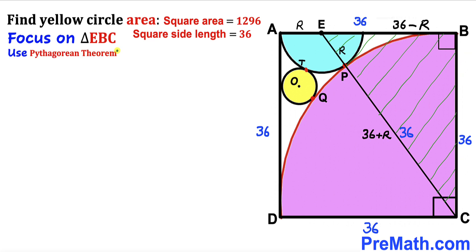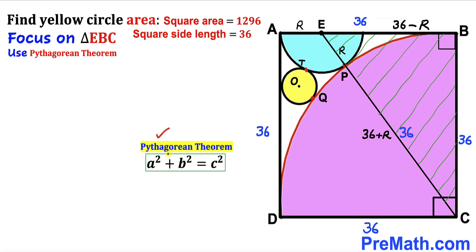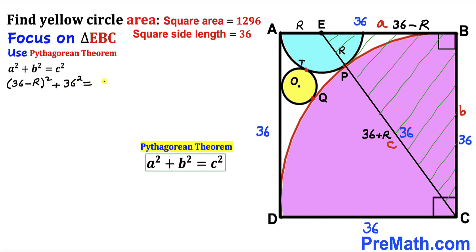Now we are going to apply the Pythagorean theorem on this triangle: A² + B² = C². Let me call the longest leg side C, this side lowercase A, and this side lowercase B. Filling in: A is (36 − R)², B is 36², and C is (36 + R)².